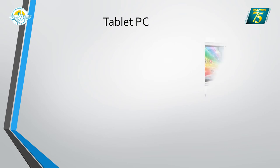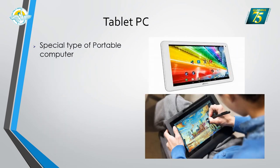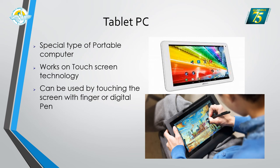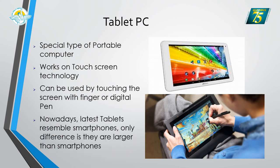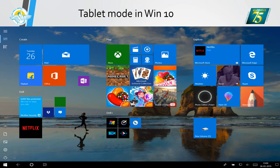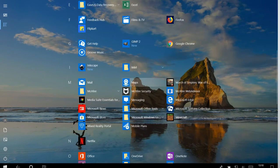The tablet PC is a special type of portable computer. It works with touchscreen technology, and you can use the screen with your finger or a digital pen. Nowadays, latest tablets more or less resemble smartphones — the only difference is they are larger. Windows 10 has a feature to convert its screen into tablet mode, changing the desktop interface to a tablet-friendly layout.